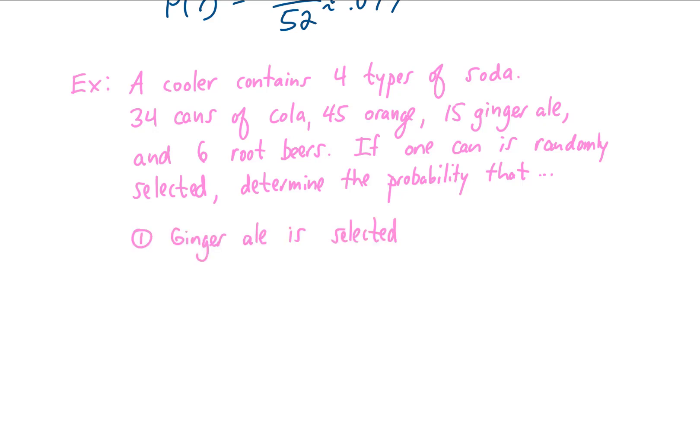Let's first determine the probability that ginger ale is selected. We would write that as the probability of ginger ale. The total number of ginger ale cans in the cooler is 15, so there are 15 possible outcomes where we select ginger ale. How many total outcomes are there? That depends on how many cans are in the cooler. We have to add up the total number of cans in the cooler. It looks to me like there are 100 total cans in the cooler, meaning that our probability of selecting ginger ale is 15 over 100. That gives us 0.15 or a 15% chance of drawing a ginger ale.